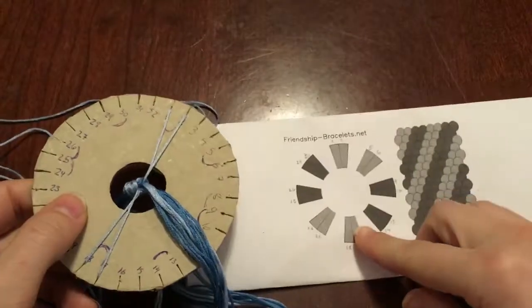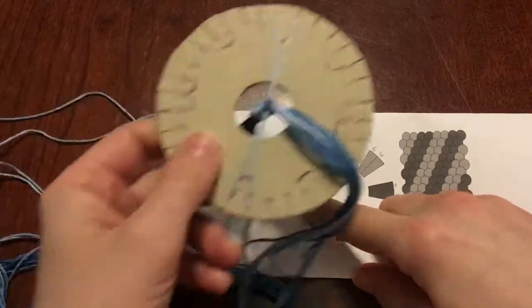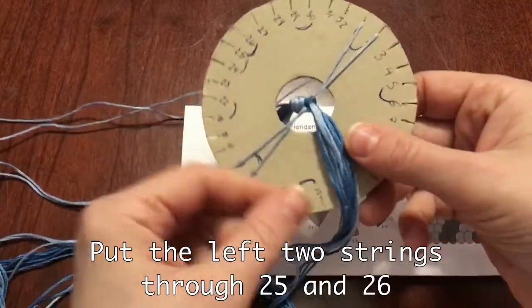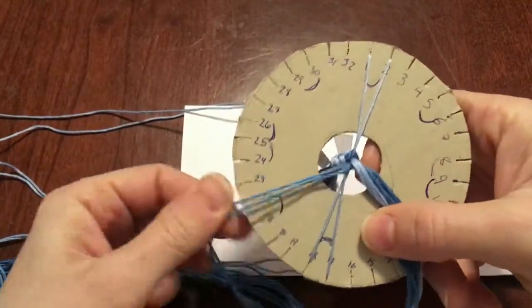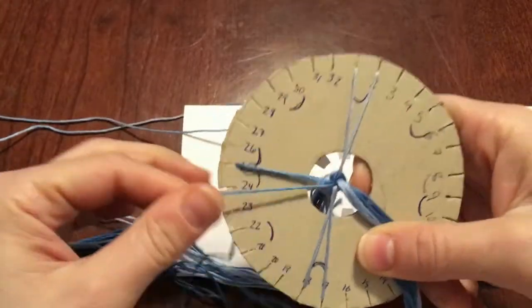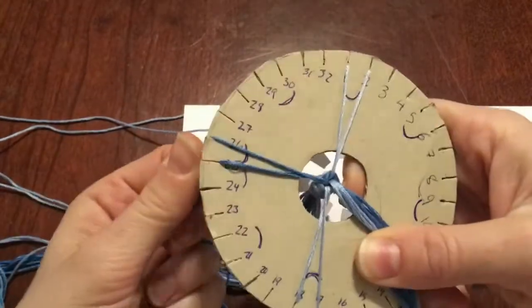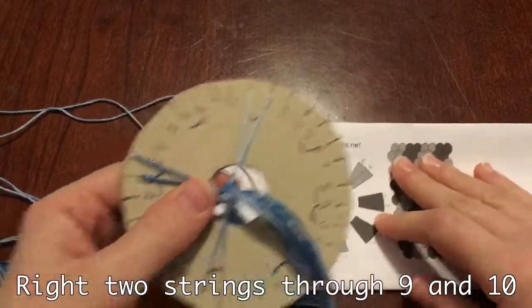Again looking at the pattern, 25 and 26 are dark blue. So take a dark blue string, put it through 25 and a dark blue string through 26. 9 and 10 are also dark blue.